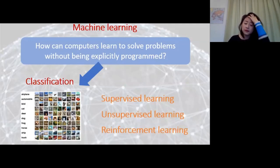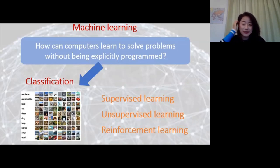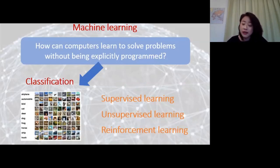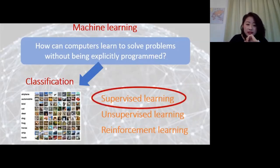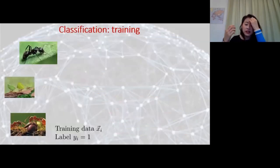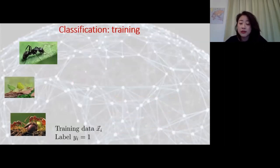There are three main approaches: supervised learning, where you're given training examples so your computer can learn from previous examples; unsupervised, where you have no training examples; and reinforcement learning, where there's interaction with the environment. For our case, we just look at supervised learning for simplicity. To explain pictorially, let's say we want to distinguish between pictures of ants and cicadas. Each picture can be represented by a vector in multi-dimensional feature space—for instance, assigning each pixel one dimension, with that dimension's value being the color of the pixel.